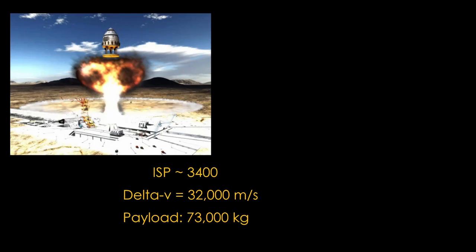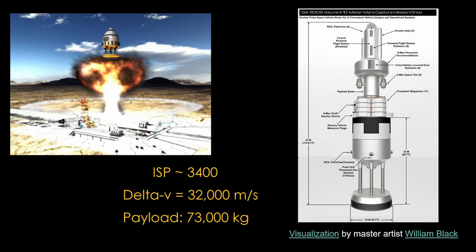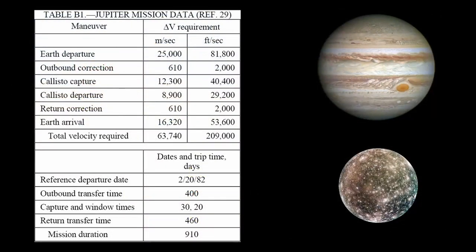Orion is great at getting off the ground and into orbit, as the atmosphere enhances the propulsive effects. This is the U.S. Air Force 10-meter Mars mission Orion. It has an ISP of around 3400, a delta V of 32,000 meters per second, and a payload of 73,000 kilograms. It can go from the Earth's surface to Mars orbit and back to low Earth orbit in a single stage, easily. You can even do a trip to Jupiter's moon Callisto with a total mission time of about two and a half years.